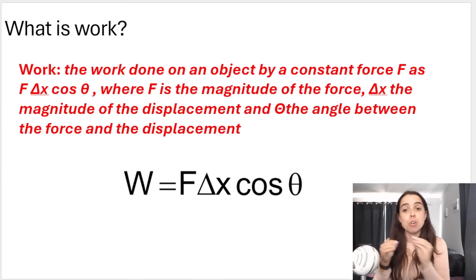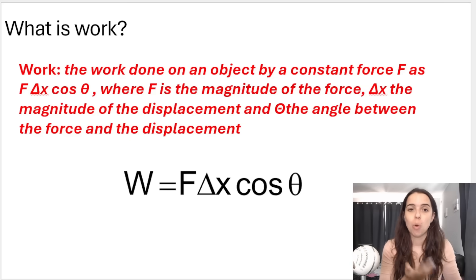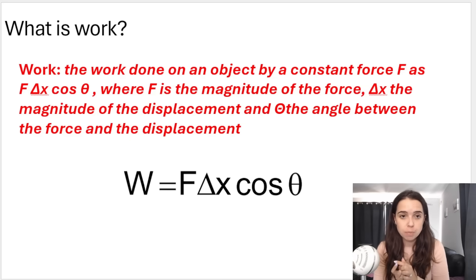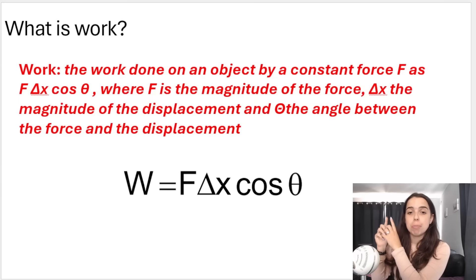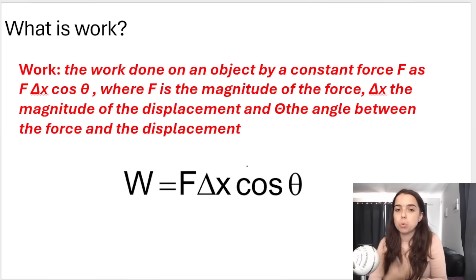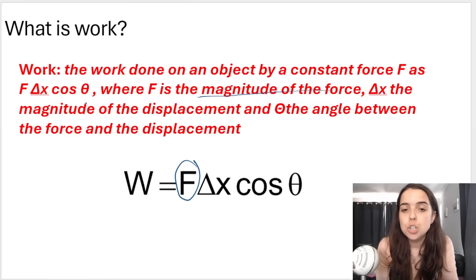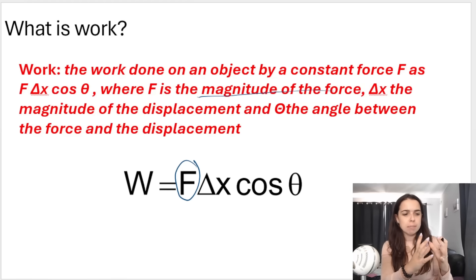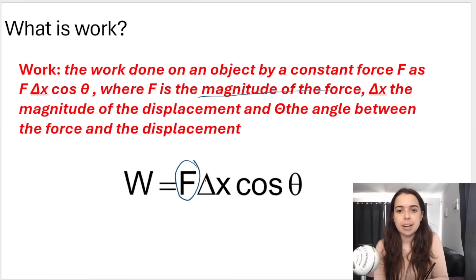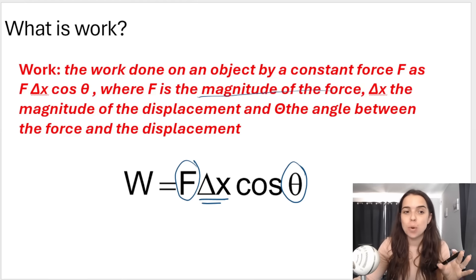Work is done by a force. So the applied force can do work, the frictional force can do work — all of these different forces can do work. The work done on an object by a force F can be represented in the formula W = FΔx cosθ, where F is the magnitude of the force, Δx is the magnitude of the displacement — how far the object moved — and cosθ involves the angle between the force and the displacement.